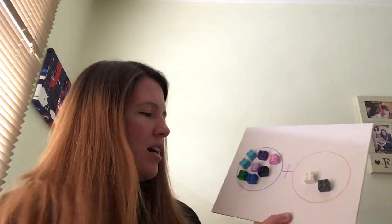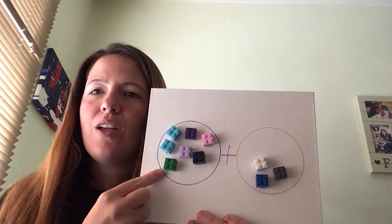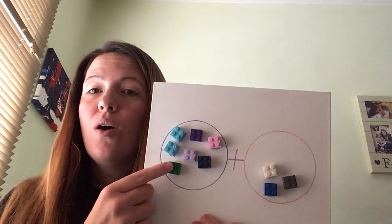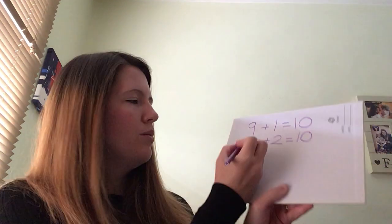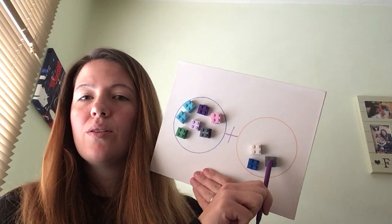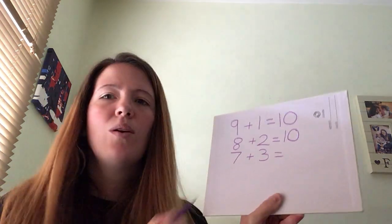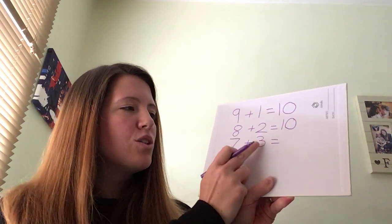I wonder if you've guessed what we're going to do next. We're going to move one across into the orange circle. Remember to do this on your board as well and follow my instructions. Can you tell me how many are in this circle? 1, 2, 3, 4, 5, 6, 7. I'm going to write it down — seven. How many are in this circle? One, two, three — three. What is the answer to all of our questions today? Ten. Well done — seven add three equals ten.